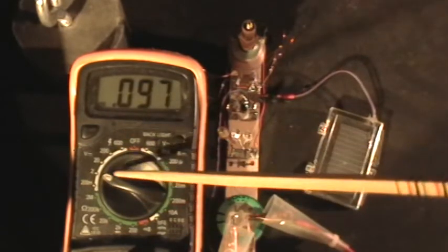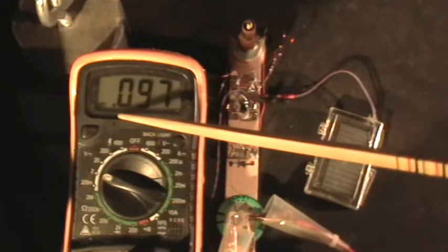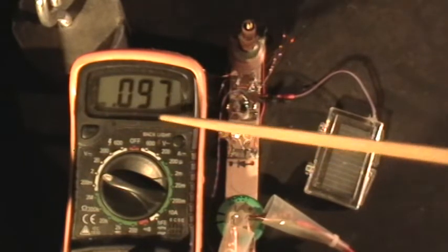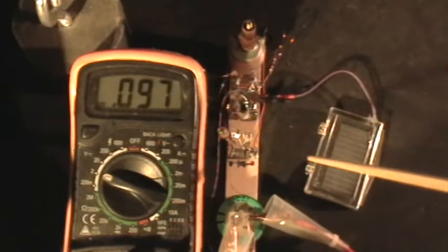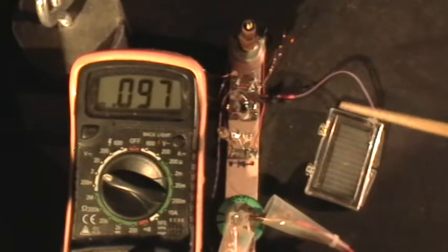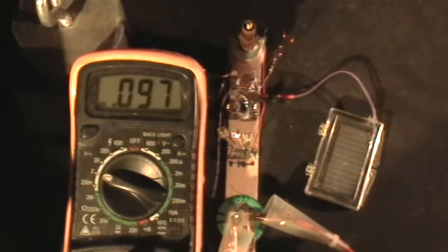The voltmeter is right now on the 2 volt scale, showing 0.097, less than one tenth of one volt. And this is a photovoltaic cell, a silicon photocell, and what I'm going to do is use a flashlight.